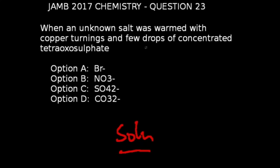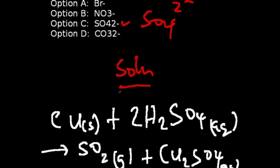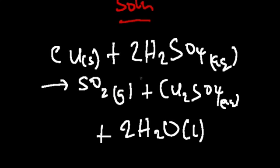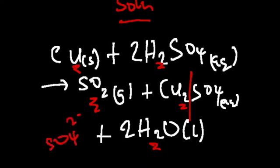Question number 23 of the JAM 2017 chemistry exams: when an unknown salt was warmed with copper turnings and a few drops of concentrated tetraoxosulphate VI acid, the correct answer is option C — SO4²⁻ ions. When copper reacts with concentrated H2SO4, the products are SO2, CuSO4, and water. When dissociated, we get Cu²⁺ ions and SO4²⁻ ions.